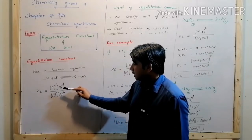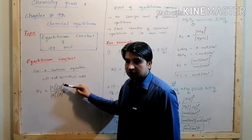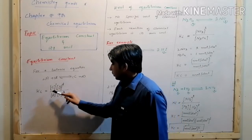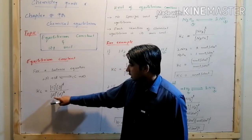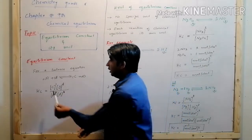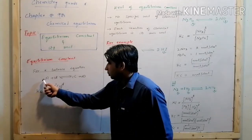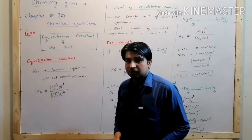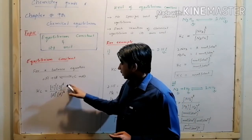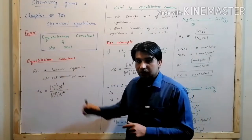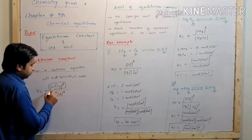Kc is equal to the concentration of C and concentration of D divided by the concentration of A and concentration of B. The stoichiometric coefficients become the powers in the expression. Once you get the equilibrium expression, it can be used with the general balanced equation.